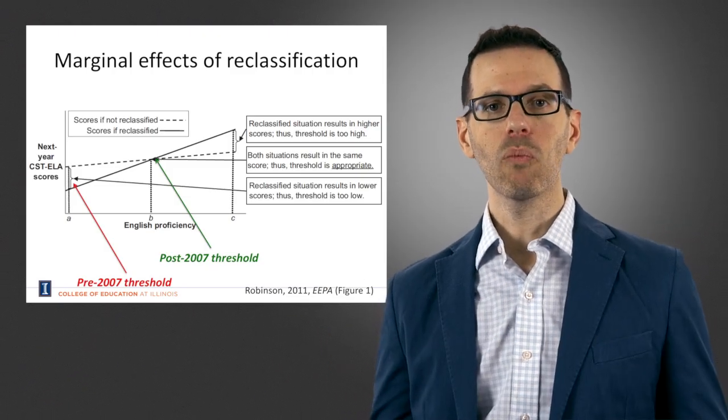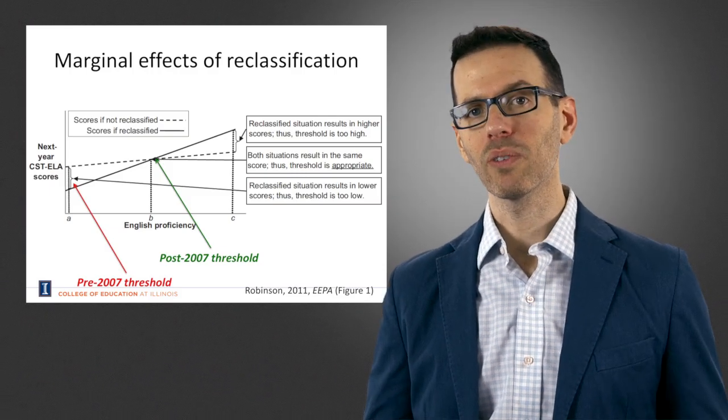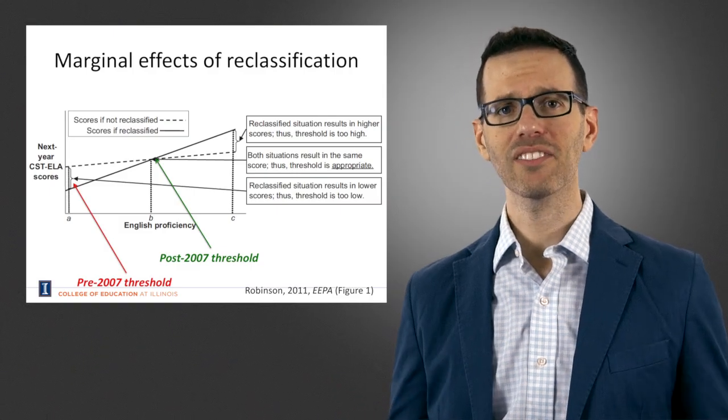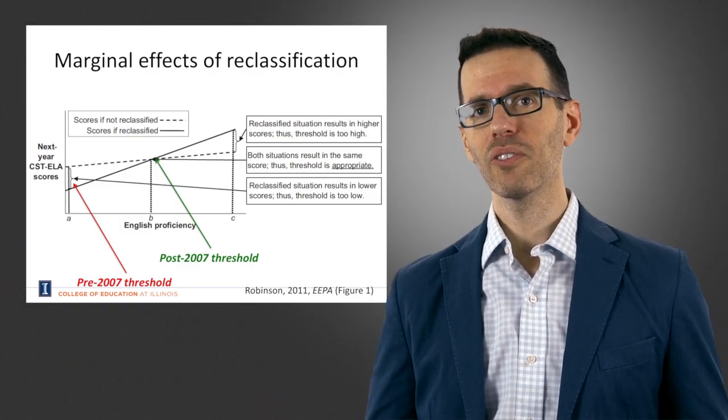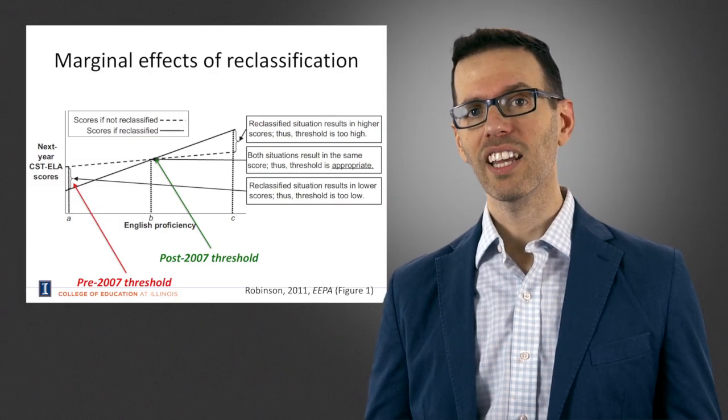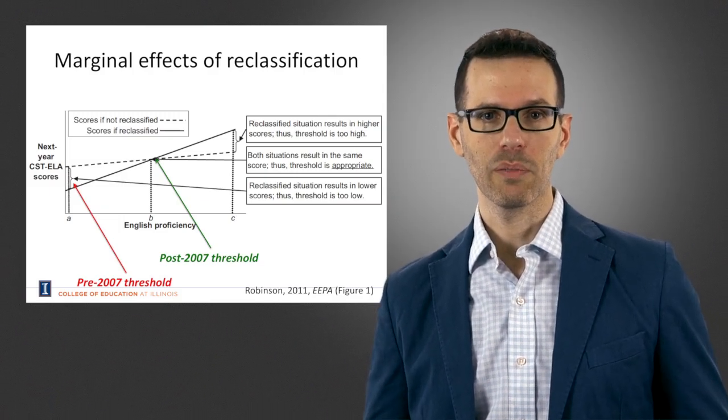So this is suggesting that once they changed the threshold, it became more of an optimal threshold, where there was neither a negative or positive effect of reclassification. This suggests that there's a smooth transition for students from the English learner setting to the reclassified fluent English proficient setting and that there isn't any sort of academic disruptions that we can detect with these particular outcomes.